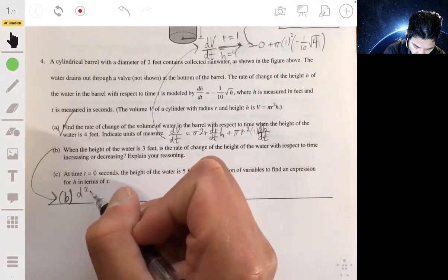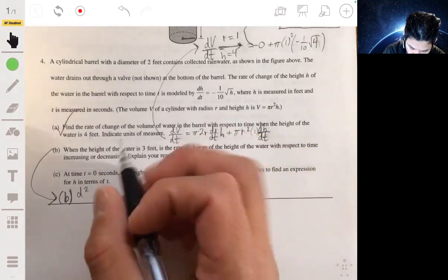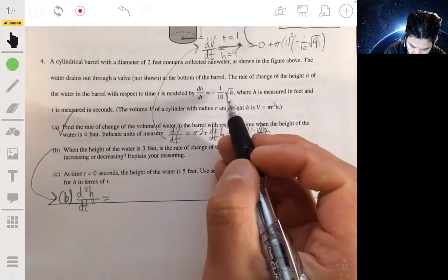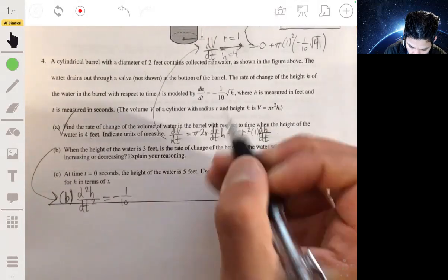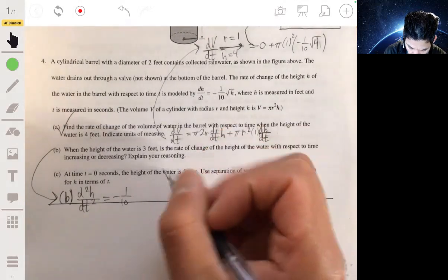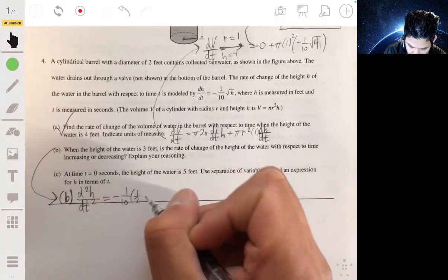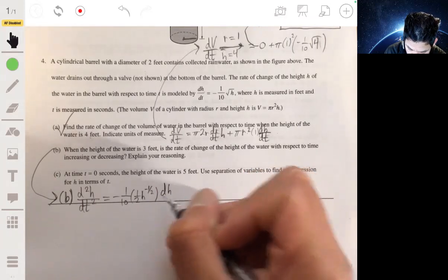So we want to find a second derivative of height with respect to time. So taking the derivative of this. So the square root of h is just h to the one-half power. So the derivative would just be one-half h, so negative one-half times dh/dt.